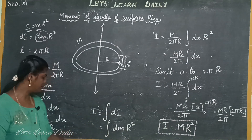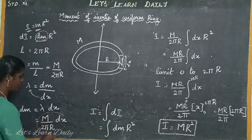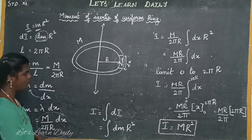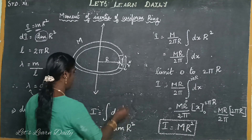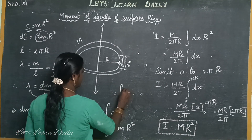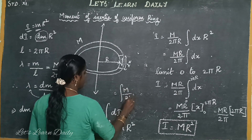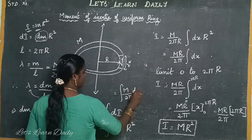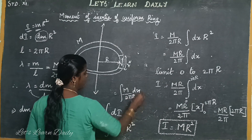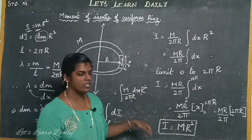So you can substitute the value of dm. Now the whole value of the integration is the same thing. How do we do this? M equals 2πr times dx. Let's proceed with this method.